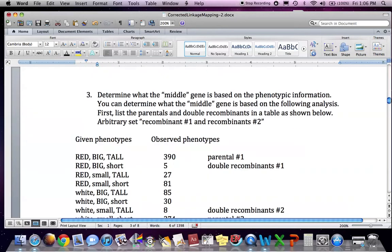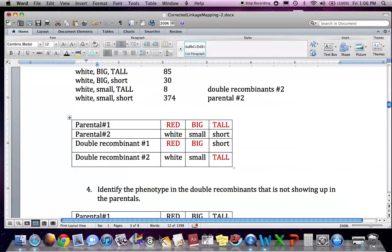So then you want to determine what the middle gene is based on the phenotypic information. First, list the parentals and the double recombinants in the table as shown below, and arbitrarily set recombinant number one and number two. The more you do these, the less labeling and organizing you have to do. You can kind of just visualize it in your head more often. But for the first few times, it's good to slug your way through and just go through the hard way and do everything.